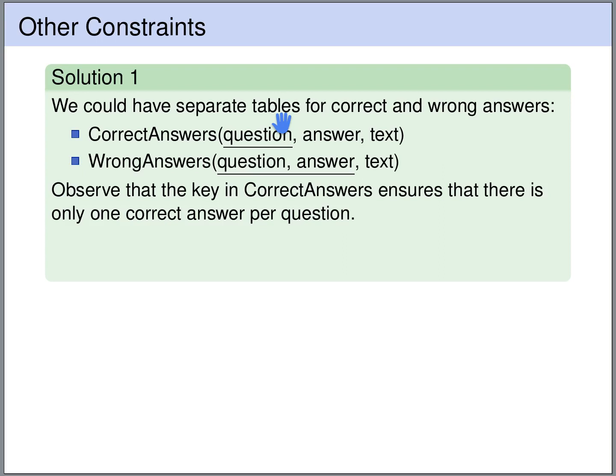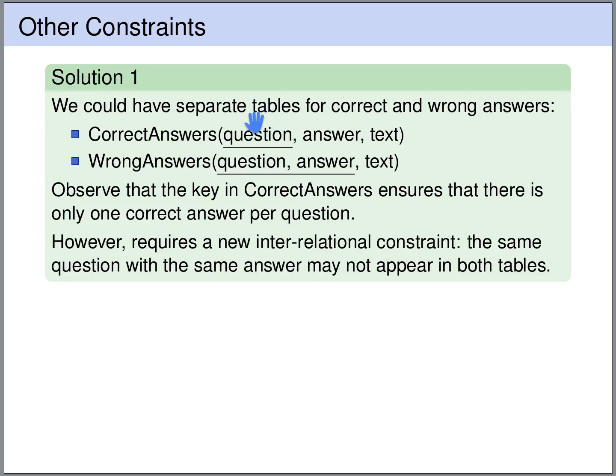This is nice, however we get other problems with this approach. Namely, for the same question — let's say for question 1 — we can have the same answer letter appearing in both tables. So it could be that question 1 has a correct answer with letter A, and also question 1 has a wrong answer with letter A. So we get a new interrelational constraint between two tables that for the same question the same answer letter cannot appear in both tables. This is a constraint that is difficult or impossible to express in database management systems.